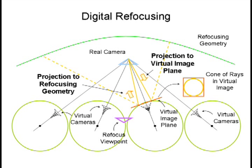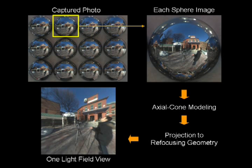Now we describe digital refocusing for wide-angle images using axial cone modeling. Recall that digital refocusing can be done from light fields via texture mapping all the camera images to a refocusing geometry. Since our axial cone modeling models each sphere as multiple perspective cameras,